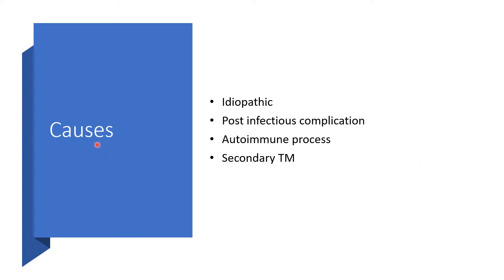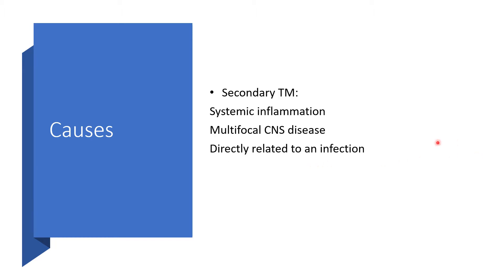What are the possible causes of transverse myelitis? It could be idiopathic — that is, an unknown cause. It might be a post-infectious complication or an autoimmune process. Secondary transverse myelitis can also exist, which could be secondary to systemic inflammation, multifocal central nervous system disease, or directly related to an infection.